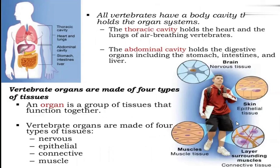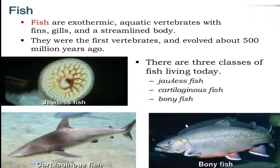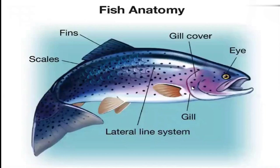Vertebrate organs consist of four types of tissues: nervous tissue, epithelial tissue, connective tissue, and muscle tissue. Fish are ectothermic aquatic vertebrates that maintain body temperature through their environment. They have fins, gills, and a streamlined body. There are three classes: jawless fishes, cartilaginous fishes like sharks, and bony fishes.